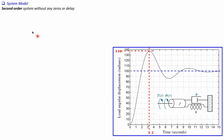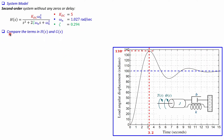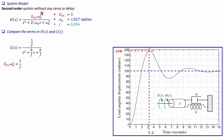Comparing the general model to our transfer function G(s), the numerator KDC times omega_n squared equals 1 over J. Therefore J equals 1 divided by (KDC times omega_n squared). Substituting the known values of KDC and omega_n gives the moment of inertia J equal to approximately 0.190 kilogram meters squared.